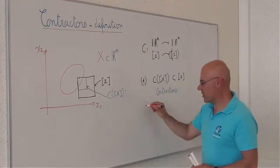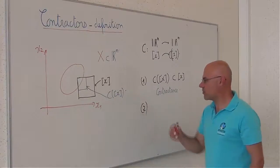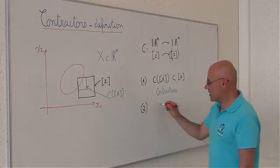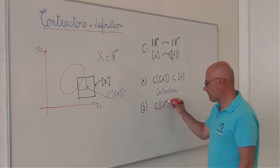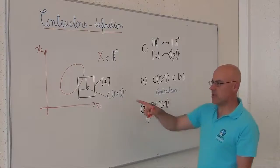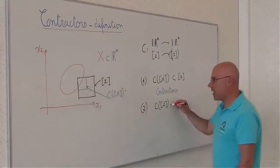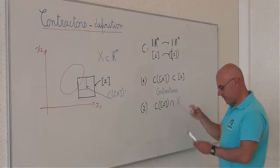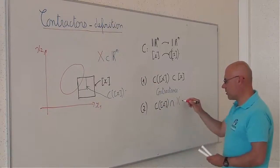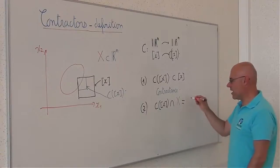The second property that should be satisfied is that the intersection between the contracted box and the set X should be equal before and after the contraction.